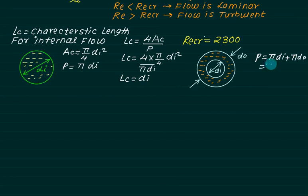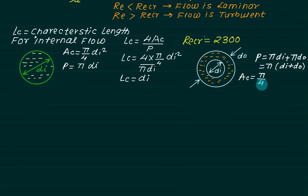The total wetted perimeter is pi times (di plus do). The hollow cross-sectional area is pi by 4 times (do squared minus di squared).